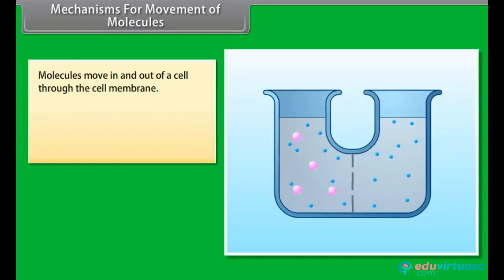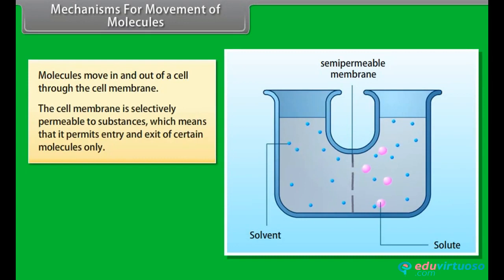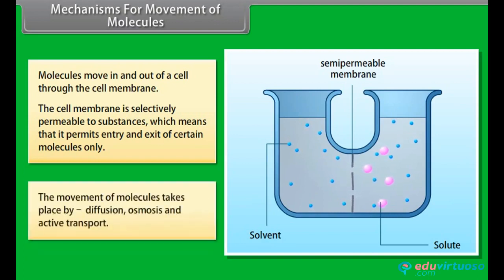Molecules move in and out of a cell through the cell membrane. The cell membrane is selectively permeable to substances, which means that it permits entry and exit of certain molecules only. The movement of molecules takes place by diffusion, osmosis and active transport.